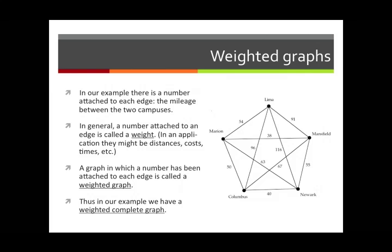In general, a number attached to an edge of a graph is called a weight — that's the generic term used in graph theory. In an application it might represent a distance, as it does here, but it could also represent a cost or a time required to complete some task. When a weight is attached to each edge of your graph, you call it a weighted graph. Since we have a complete graph with a weight on each edge, we call this a weighted complete graph.